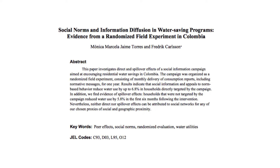The policy intervention investigated was to provide information in a household's water bill about the amount of water used by the household's neighbors and to compare this to the household's own water use. This information was updated monthly and included in households' water bills for one year.